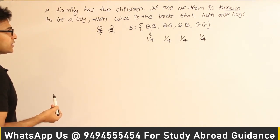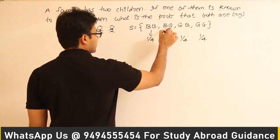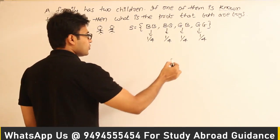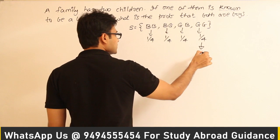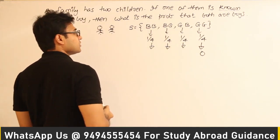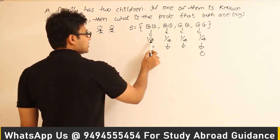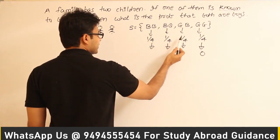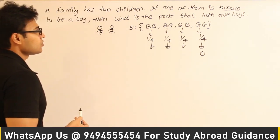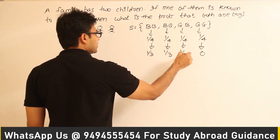Now it is given that one of them is a boy. So if one of them is a boy, just rearrange the probabilities and see what happens. The probability for the event 'both girls' is 0, and the probability for the remaining events has to be something greater than 0, because one of them is a boy. Now, how many events are there? Three events. As the initial events were all equally likely, these three are also equally likely. Therefore, I will distribute the probability equally: 1/3, 1/3, 1/3.